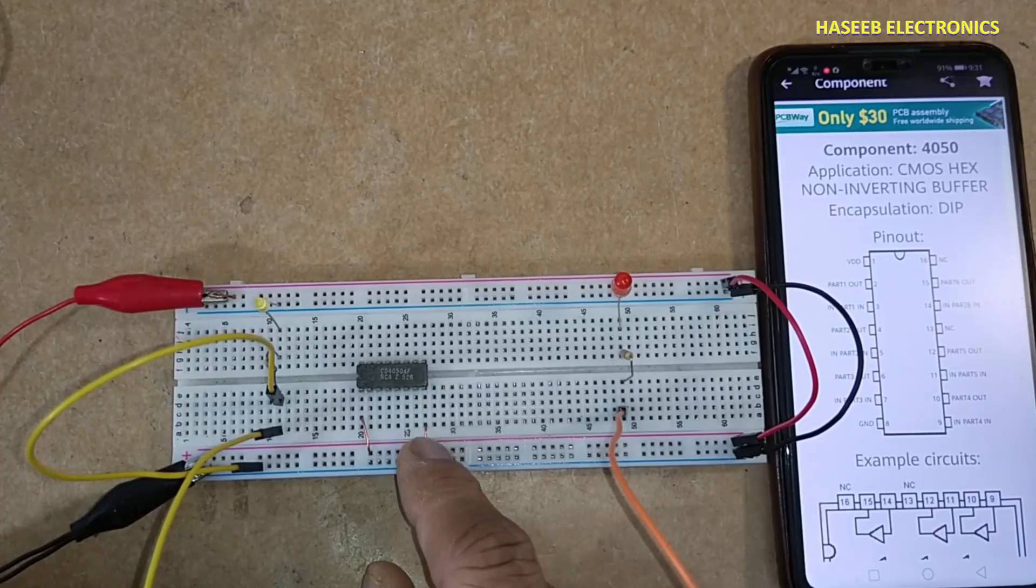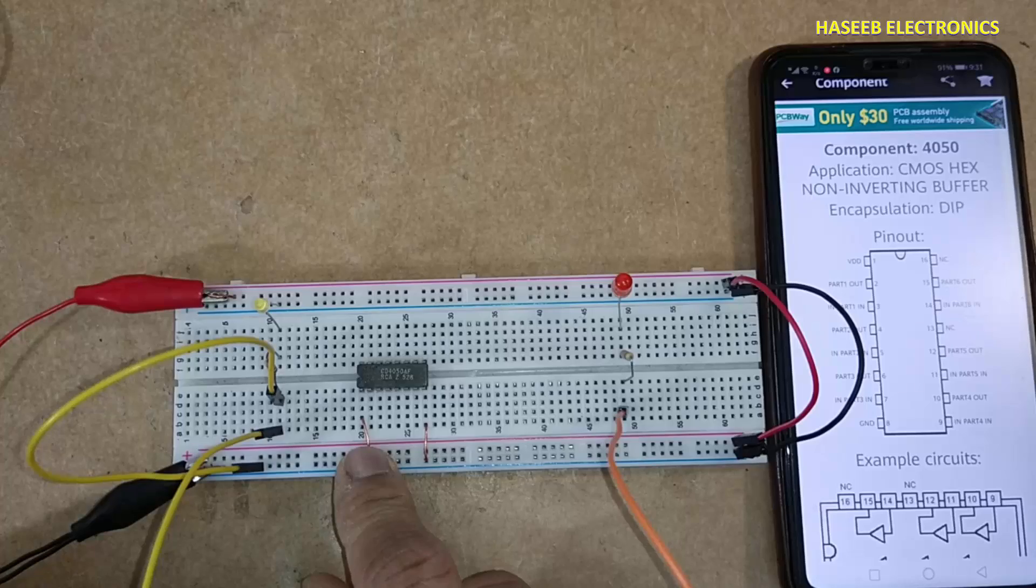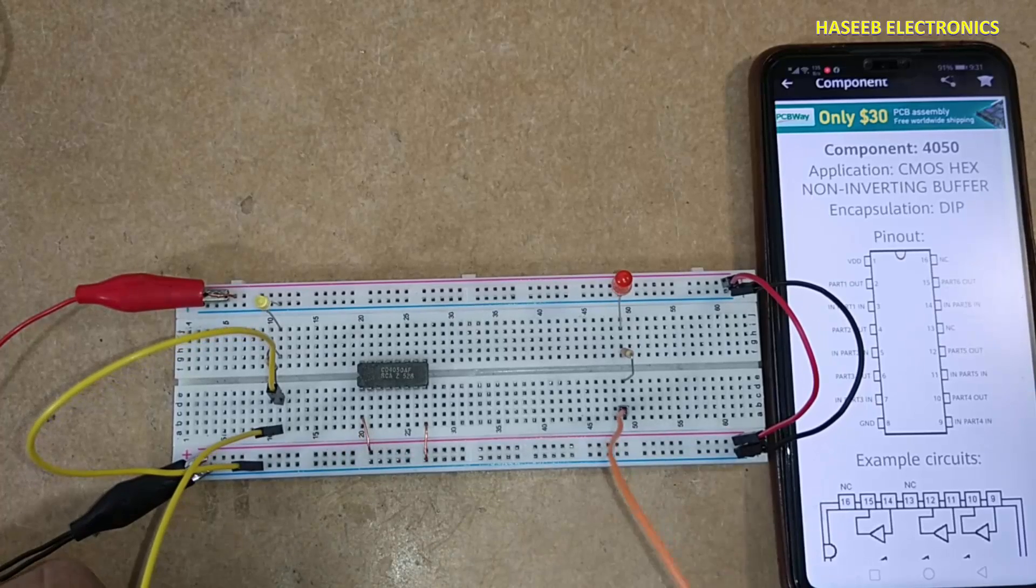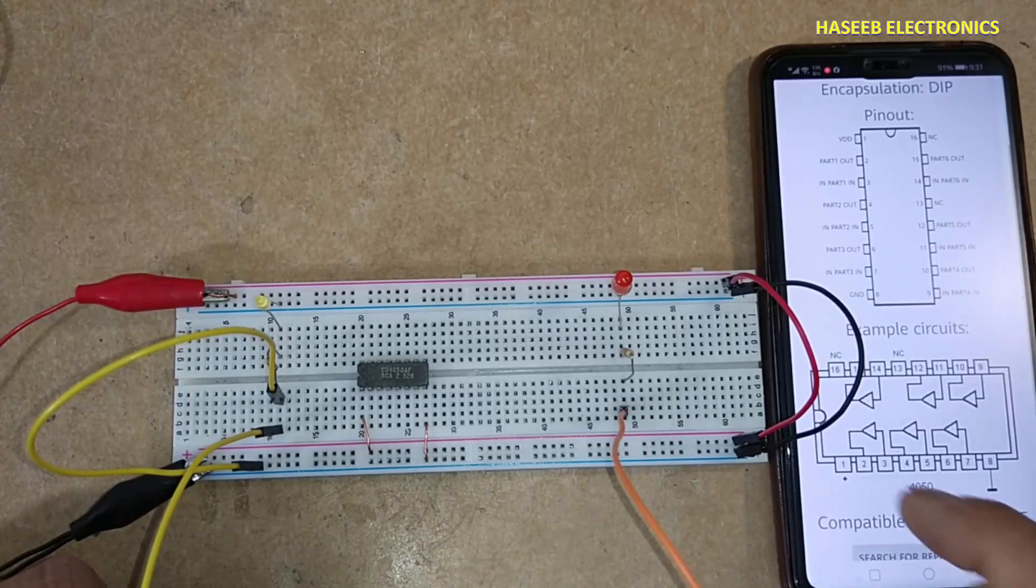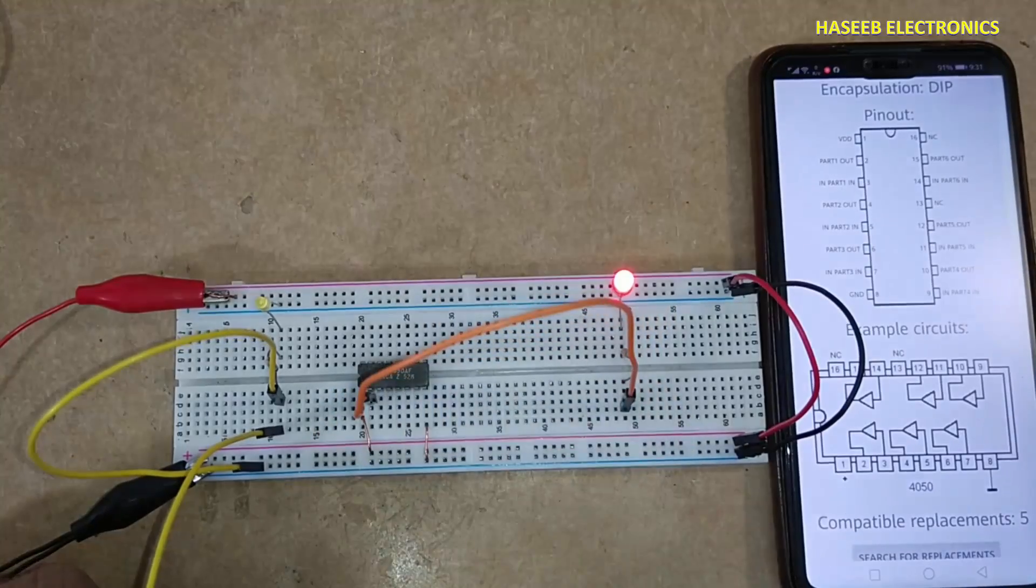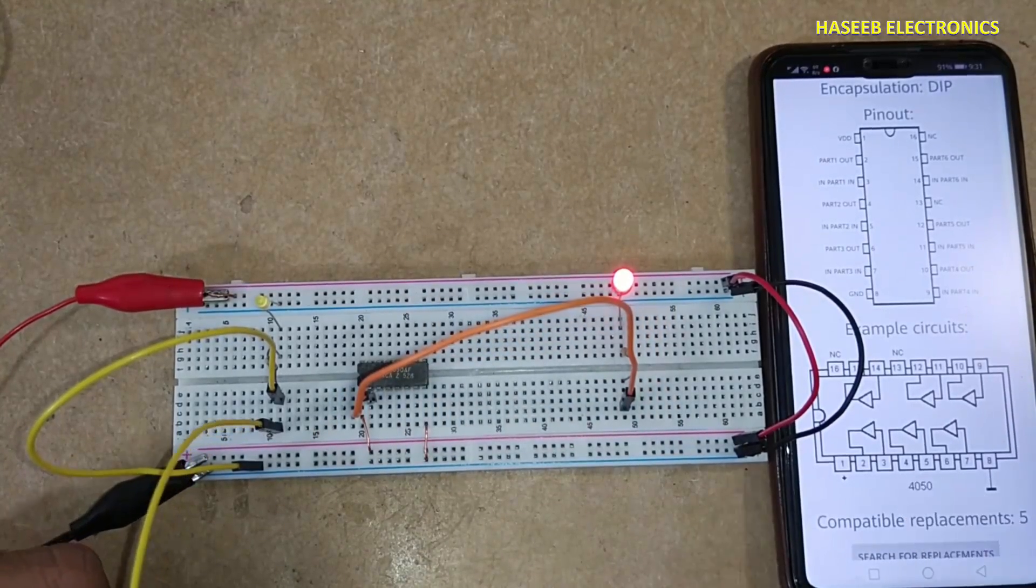Pin 8 is ground. Pin number 1 is VDD supply voltage. First buffer output is pin number 2. Pin number 3 is input.